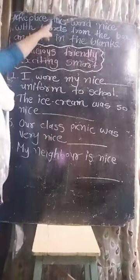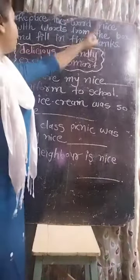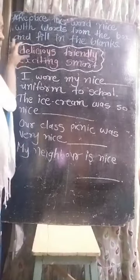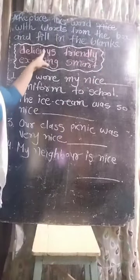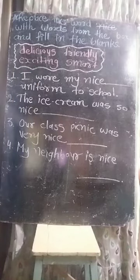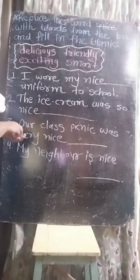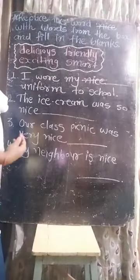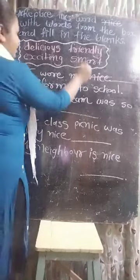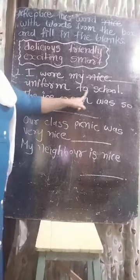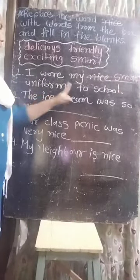Now see next exercise: replace the word nice. हमें क्या करना है? Nice word को cut करना है और उसकी जगह नया word लिखना है। Nice को cut करके क्या लिखना है? Smart. I wore my smart uniform to school. Write down the answer: smart. I wore my smart uniform to school.